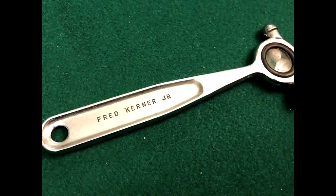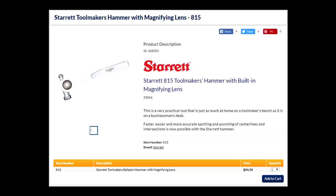If you're really interested, Starrett still makes these. This toolmaker's hammer is $94.50, I believe, at Penn Tool Company. It's a really great conversation piece, but I never use mine anymore because I don't believe we center punch that much anymore.